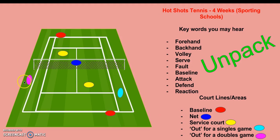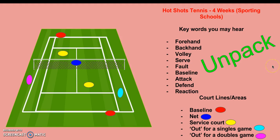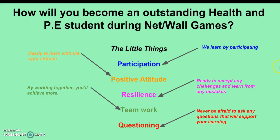The ball must land in these areas when serving for a singles game, and there is a different out area for a doubles game. So if you've got two players playing together — you and your partner versus another pair — this is the out area, and if you're playing just against someone else, this is the out area for singles. We'll be unpacking these words and how they relate to our net and wall game of tennis.